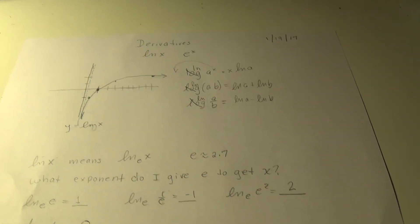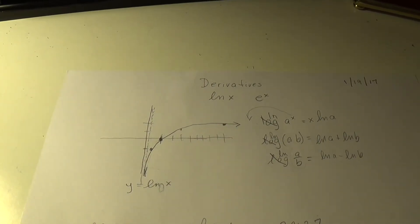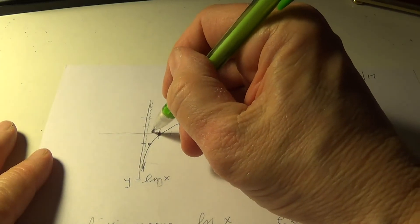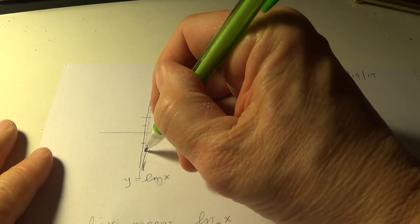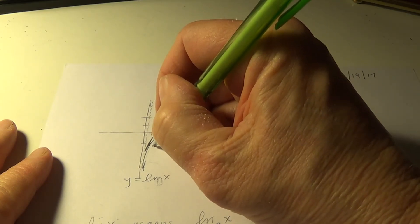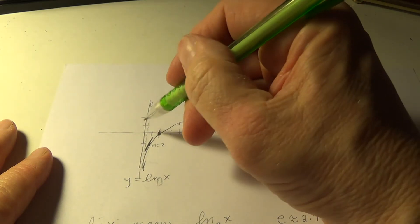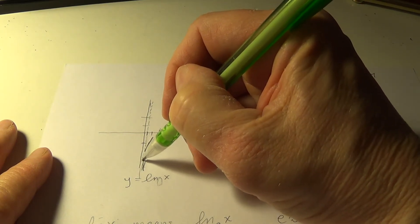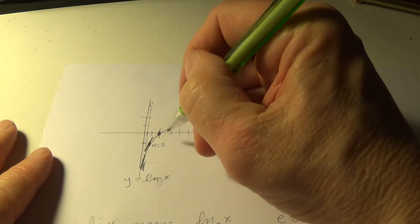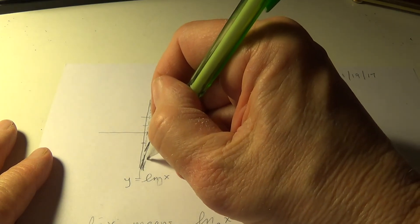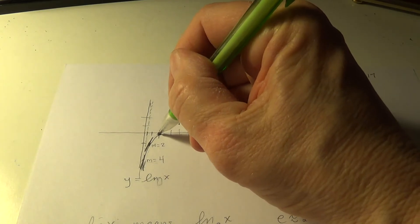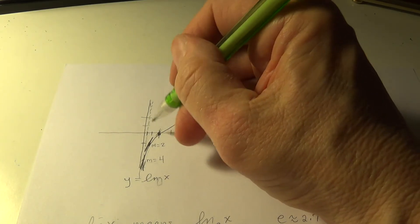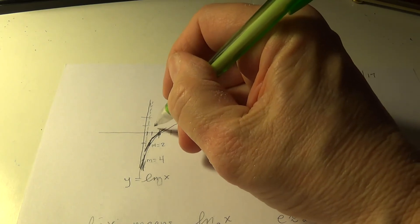And I want to put in some values. And it turns out, say when x is 1 half, the slope here is pretty high. In fact, when x is 1 half, the slope here is 2. And say x is 1 fourth. It's even steeper. When x is 1 fourth, the slope is 4. So let's see if you can pick out the derivative. Right here, where x is 1, there, the slope is 1.